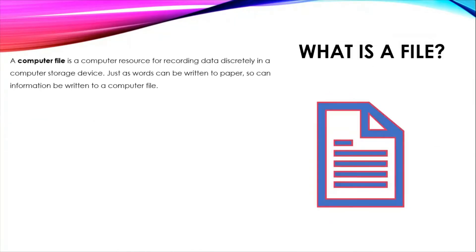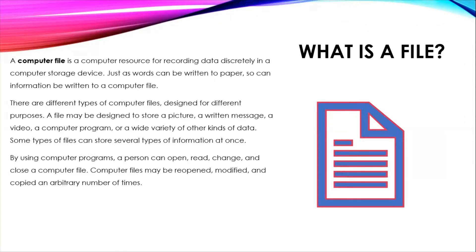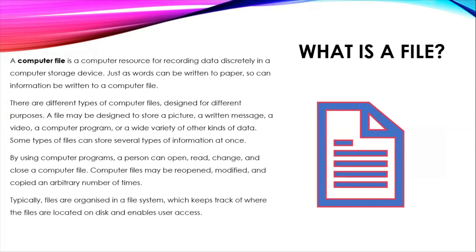A computer file is a computer resource for recording data discreetly in a computer storage device. Just as words can be written to paper, so can information be written into a computer file. There are different types of computer files designed for different purposes. A file may be designed to store a picture, a written message, a video, a computer program or a wide variety of other kinds of data. Some files can store several types of information at once. By using a computer program, a person can open, read, change and close a computer file. These files may be reopened, modified and copied any number of times. Typically, files are organised within a file system which keeps track of where the file is located on disk and enables user access.